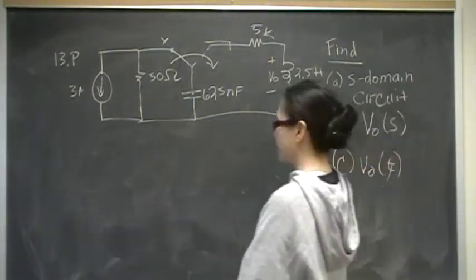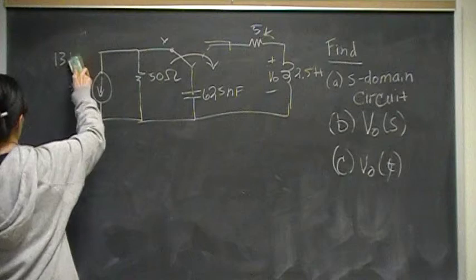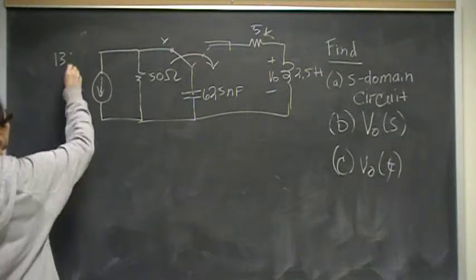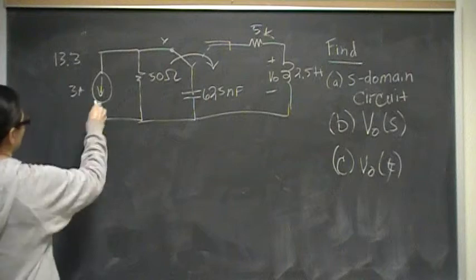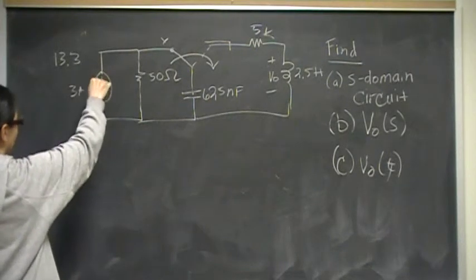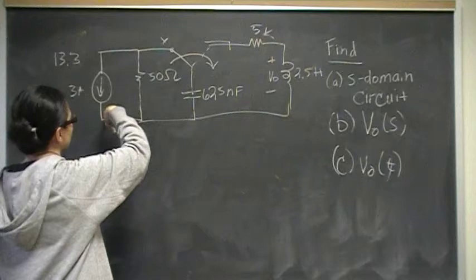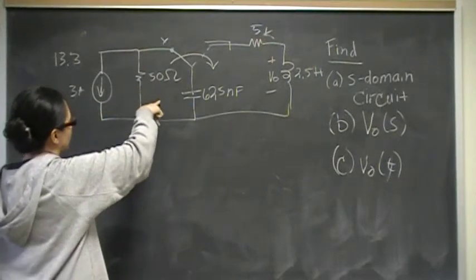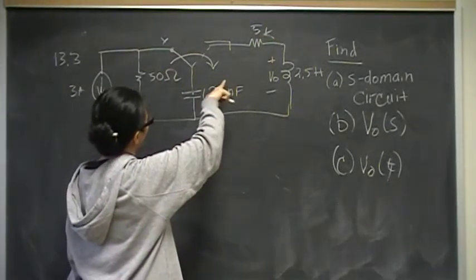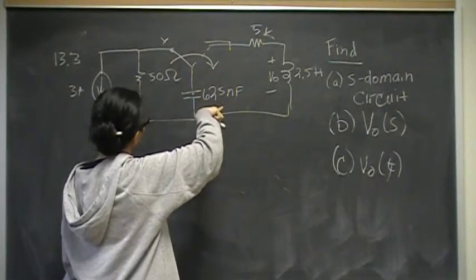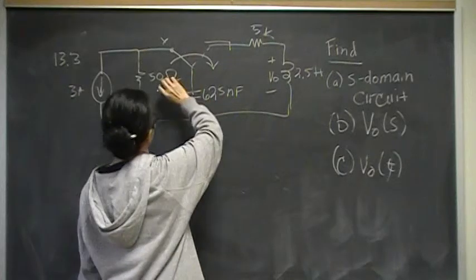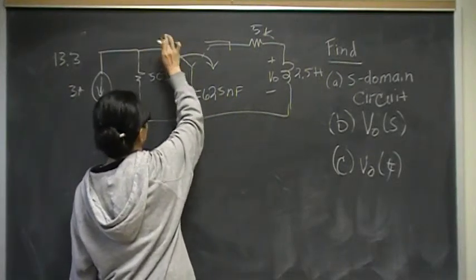This is problem number 9 from chapter 13, and this section is on applications, circuit applications. We have a circuit that looks like we have a 3 amp independent current source here, in parallel with a 50 ohm resistor, and that is in parallel.